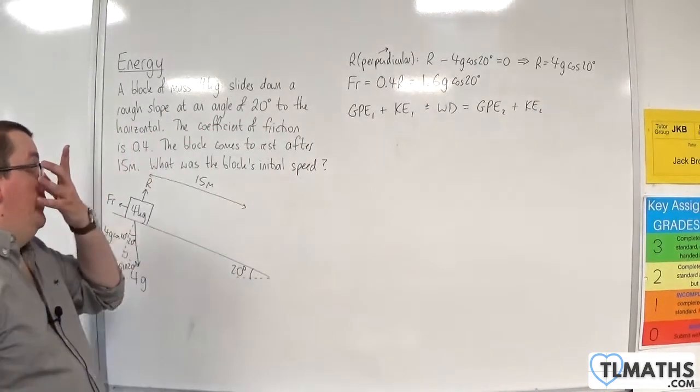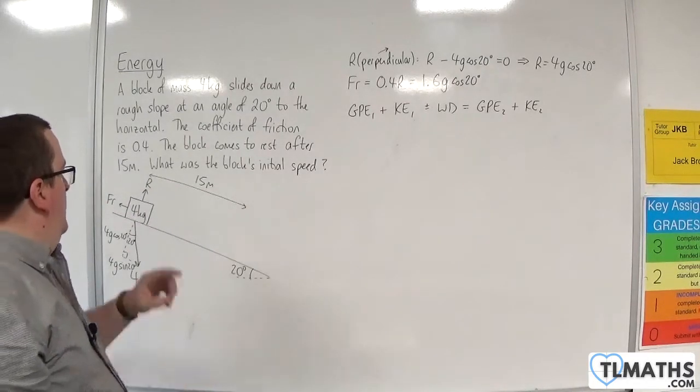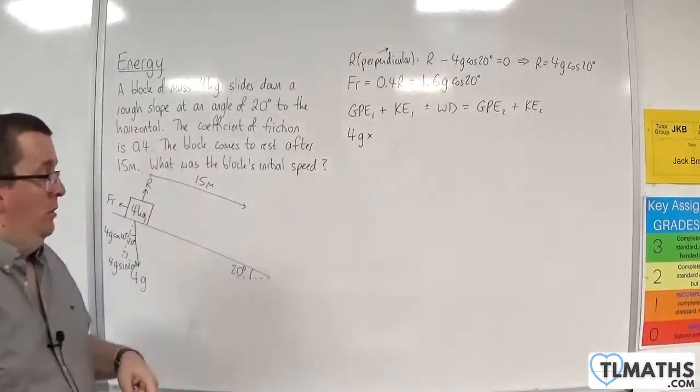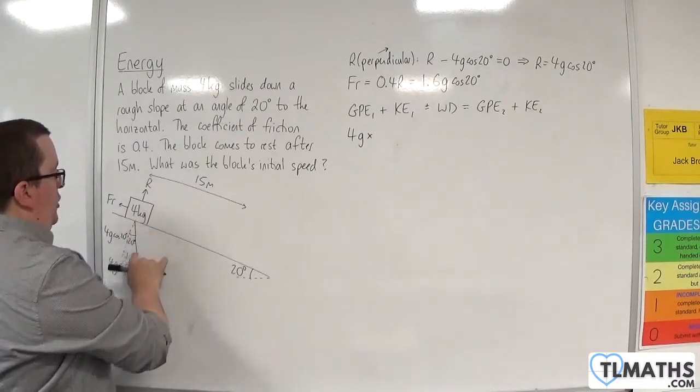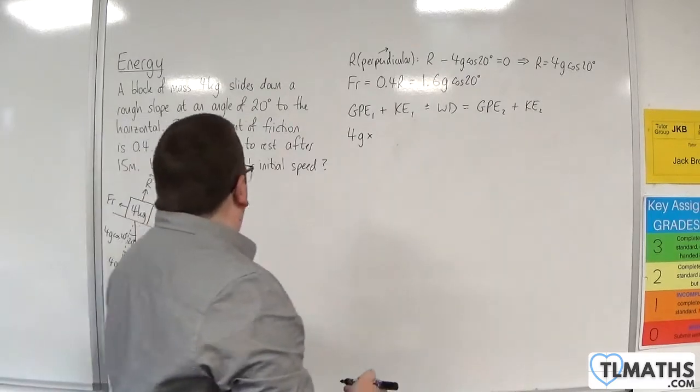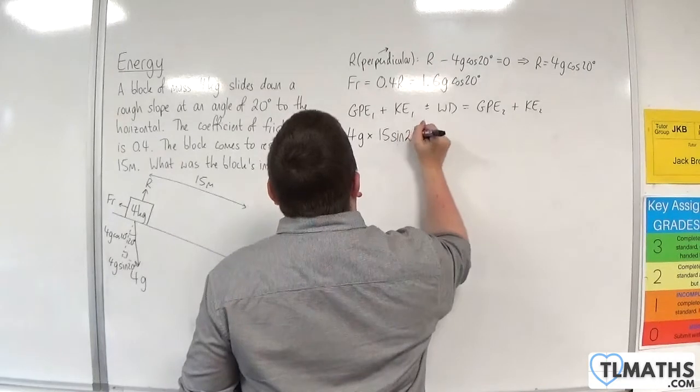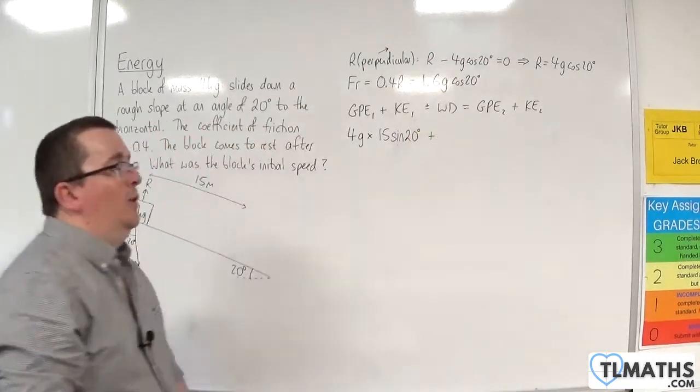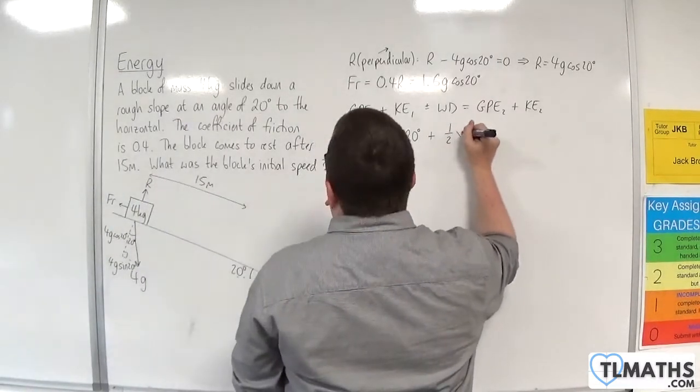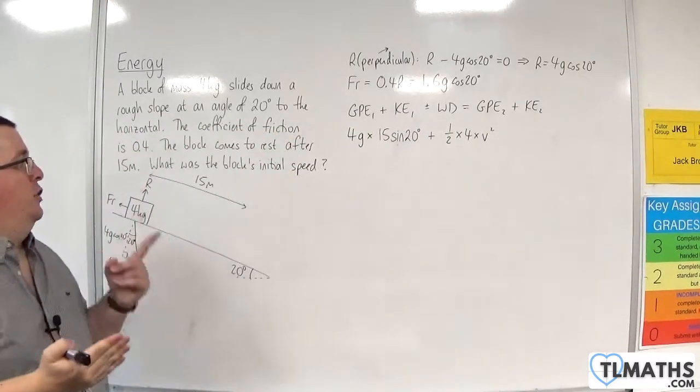So the initial gravitational potential energy will be Mgh. Now M is 4, so we'll have 4g times H, which is going to be the height, essentially, of this right-angled triangle. It's got a hypotenuse of 15, the angle's 20, so that's going to be 15 sin 20. Plus the initial kinetic energy, which will be 1 half times M times V squared. Remember, that's the V I want to find, the initial speed.